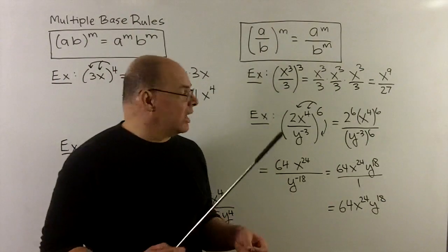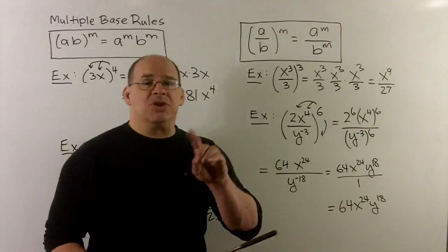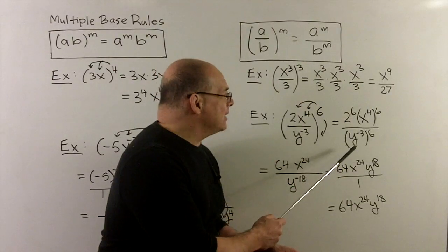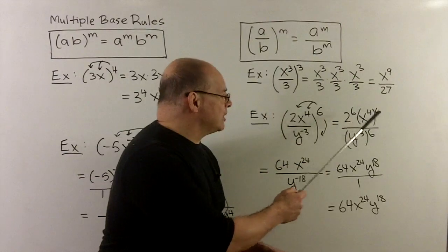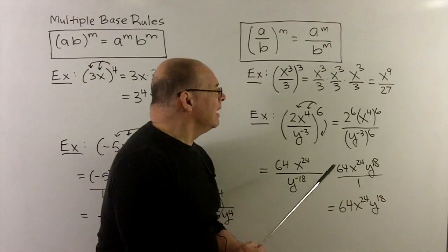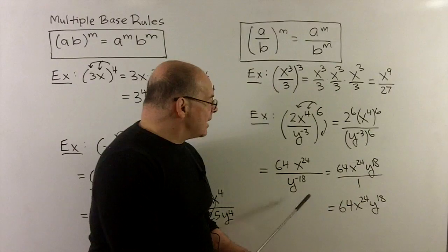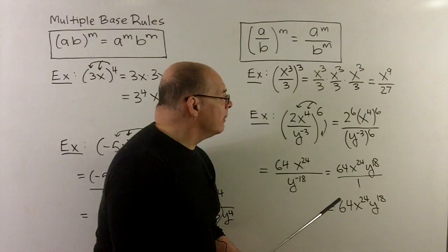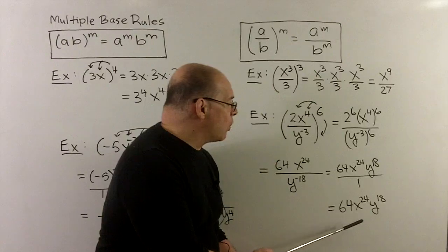For something with three terms, let's try 2x to the 4 over y to the minus 3, quantity raised to the 6th power. I distribute the 6th to everything in the parentheses: 2 to the 6, x to the 4 to the 6, and y to the minus 3 to the 6 in the denominator. Power rule: x to the 4 to the 6 means 4 times 6, so x to the 24. In the denominator, minus 3 times 6 is minus 18, so y to the minus 18. And 2 to the 6, which we already worked out, is 64. To get rid of the negative exponent, cross the y to the minus 18 across the bar to become y to the 18 in the numerator, leaving us with 64 x to the 24 y to the 18.